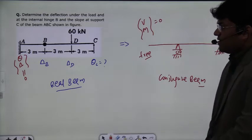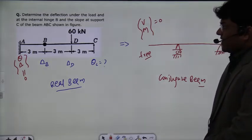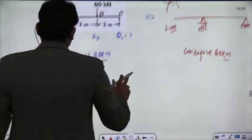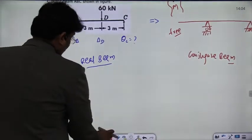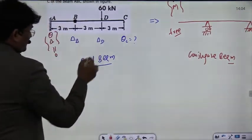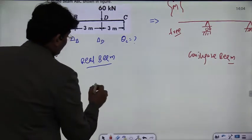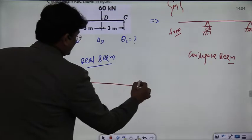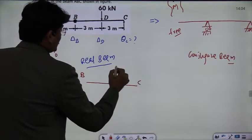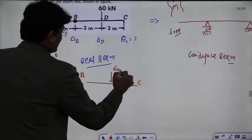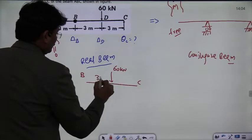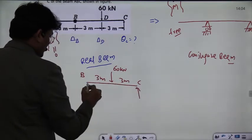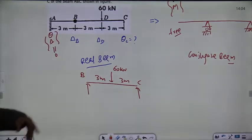Now we will draw the bending moment diagram. This bending moment diagram is for the first free body diagram. Let's draw the free body diagram from B to C. So here you have a load of 60 kN. This is 3 meters and you have another 3 meters. This is the vertical reaction, and from B you will have a vertical reaction.